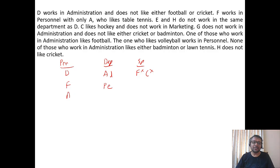A, which means in the Personnel department there are only two people. So three people in Marketing and three in Administration. A likes table tennis. E and H do not work in the same department as D. D is in Administration, so E and H work in Marketing.